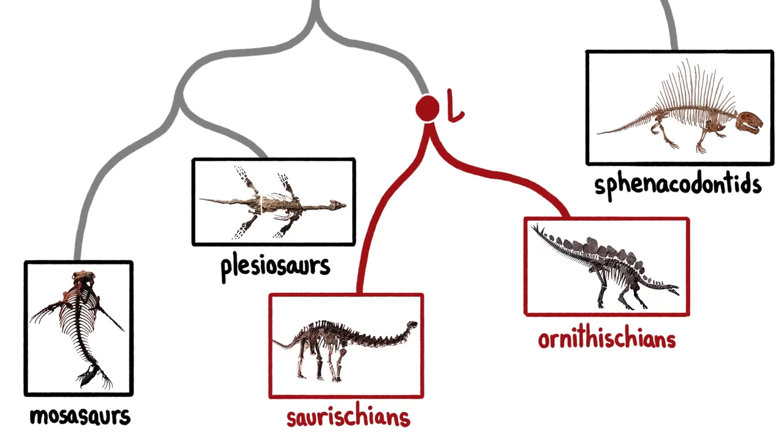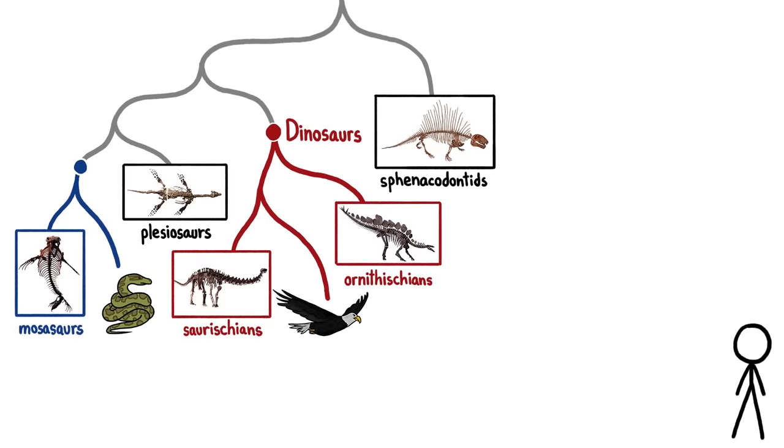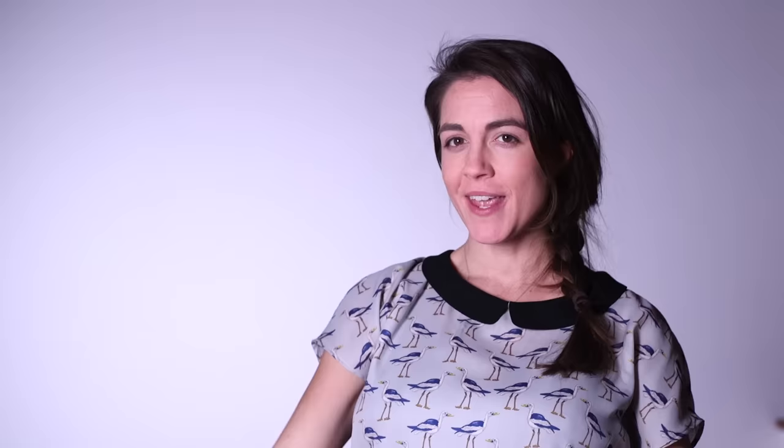Some, the group we now call dinosaurs, belong to a branch that includes modern-day birds. Others share family ties with today's snakes. And we can trace our own family trees back to our great-great-great-great ant, the Dimetrodon. Which is surprising. I was expecting my great-great-great ant to look more like this.